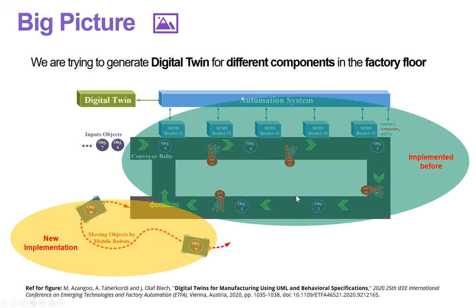We need something similar for other components in a factory in a manufacturing environment. For example, we modeled the conveyor belt system and generate digital twin for that.